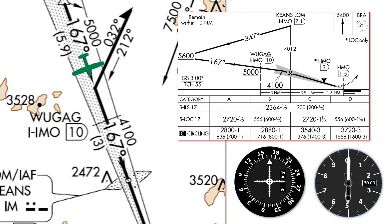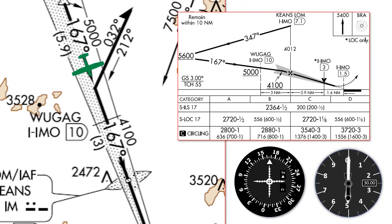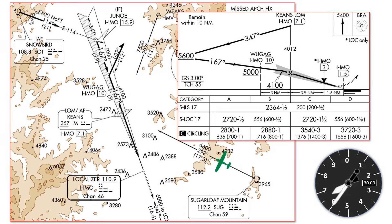You won't always hear the phrase "until established" from the controller. They're only required to give you an altitude to maintain before intercepting the course when you're on an unpublished route, like our radar vector was. We could have just as easily been cleared for the approach from Sugarloaf Mountain, following the feeder route at 6,600 feet into the Keen's NDB, flying outbound, and then executing the procedure turn. ATC would just tell us we're cleared for the approach without mentioning an altitude to maintain until established. That doesn't mean we stop paying attention to when we actually get established — that subsection of 91.175 still applies.